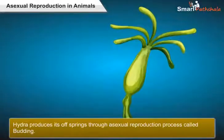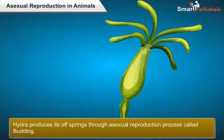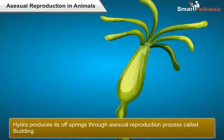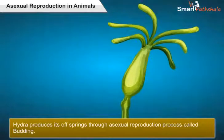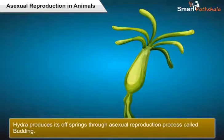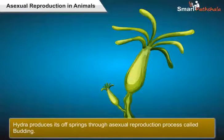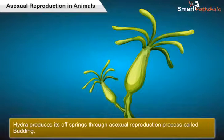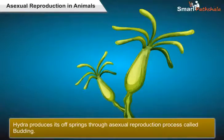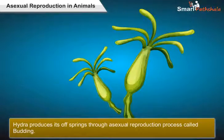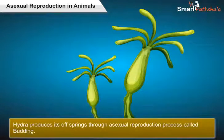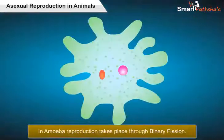Let us now understand reproduction in hydra. Hydra produces its offspring through asexual reproduction called budding. In hydra, new individuals develop as outgrowths from a single parent, and we call these outgrowths buds. The buds gradually grow in size, and after reaching a particular size, they get separated from the parent hydra. This process is called budding.